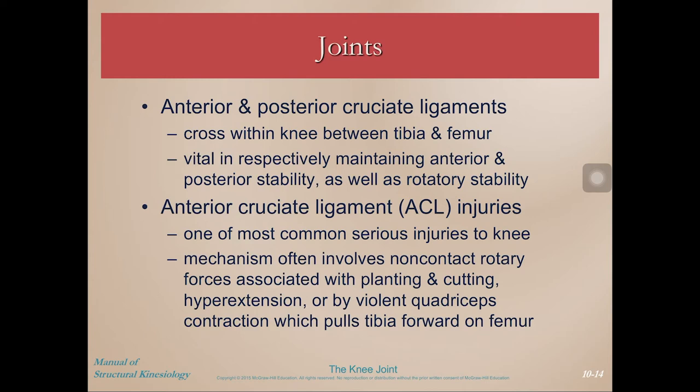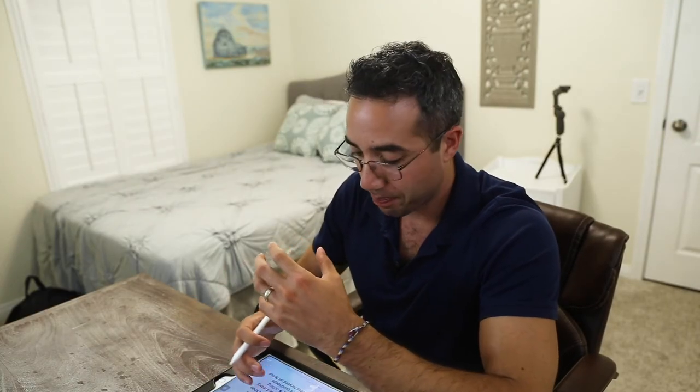The ACL and PCL cross within the knee to join the tibia and femur, maintaining anterior-posterior and rotary stability. ACL injuries are among the most common, and they typically happen through non-contact mechanisms — usually involving a rotary component, such as cutting quickly or a twisting motion with the foot planted. The ACL and PCL have a rotary stability component, so twisting the knee quickly under load can cause the ACL to pop, or even a violent quadriceps contraction can cause it.